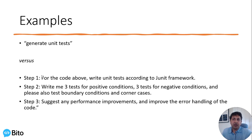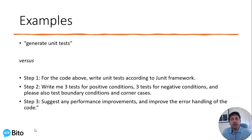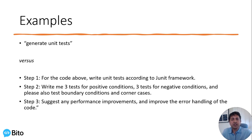For example, you could just say 'generate unit tests for some code,' or you could break it down: 'For the code above, write unit tests according to the JUnit framework. Write three tests for positive conditions, three tests for negative conditions, and also test boundary conditions and corner cases. Suggest performance improvements and improve the error handling of the code.' You can tell this has a lot more detail, and by breaking it into steps, you're much more likely to get a result that lets you move forward quickly.